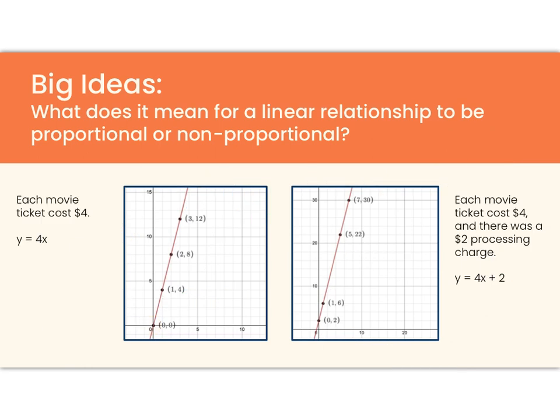So let's look at what contexts these might represent. So perhaps in this graph on the left, I might say each movie ticket costs $4. We're back in the 1990s, and movies aren't expensive. So I could write an equation, y equals 4x. That would be proportional, and 4 is my constant of proportionality. It's my slope, which I could also call my rate of change. And it is also my unit rate. It's the cost of each movie ticket, so it has real-world meaning to me.